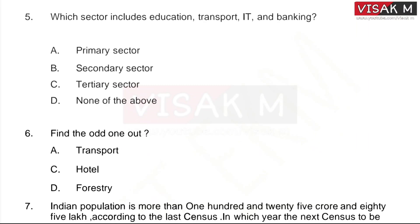Question five: Which sector includes education, transport, IT, and banking? Options: A, primary; B, secondary; C, tertiary; D, none of the above. The right answer is option C, Tertiary Sector.